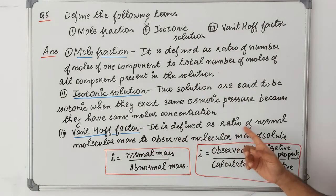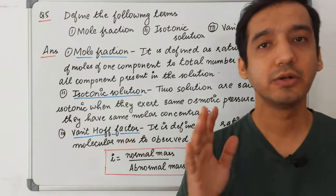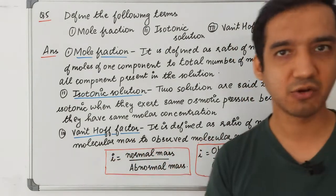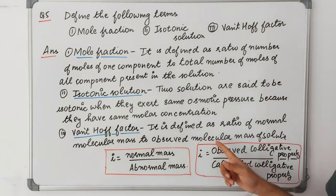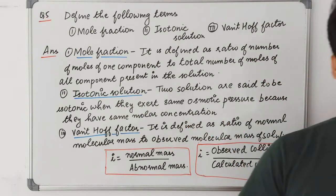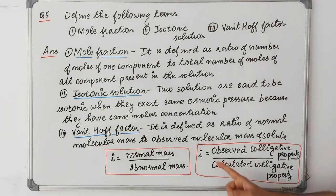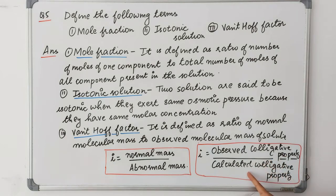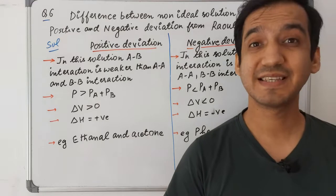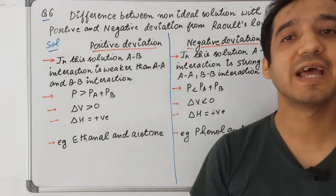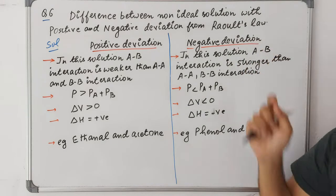Van't Hoff factor (i) is defined as the ratio of normal molecular mass to the observed (abnormal) molecular mass. It can also be expressed as the ratio of observed colligative property to the calculated colligative property: i = normal mass ÷ abnormal mass = observed colligative property ÷ calculated colligative property.